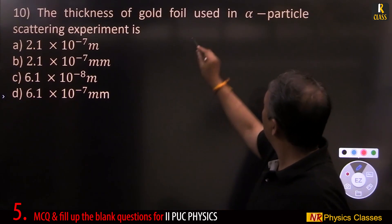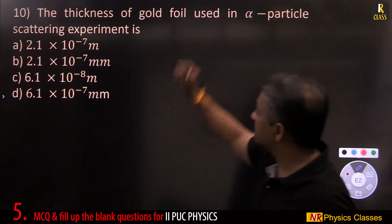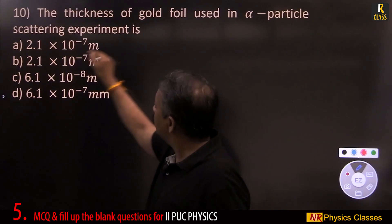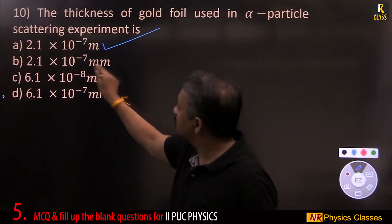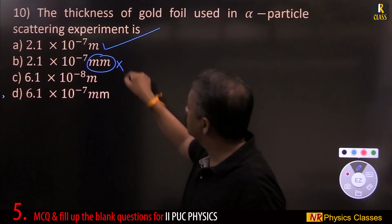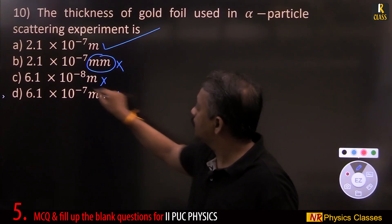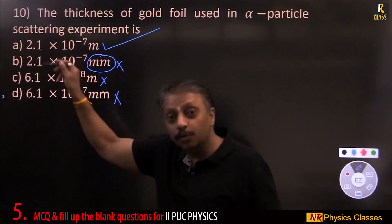The thickness of gold foil used in alpha particle scattering is 2.1 × 10 to the power of minus 7 meter. This was used in that experiment.